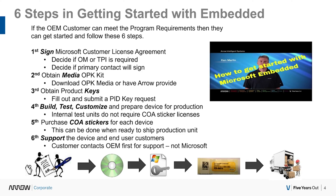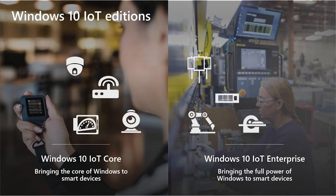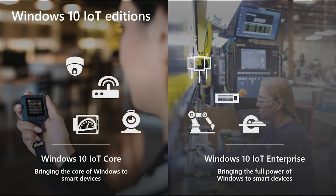There are two IoT editions — people get these confused: IoT Core and IoT Enterprise, and today I'm covering IoT Enterprise. IoT Core is much smaller; typical devices that usually don't have a screen, very low-end, entry-level stuff. IoT Enterprise is when you need the full power of Windows — typically running an i5, i7, or Atom processor, with a full system.